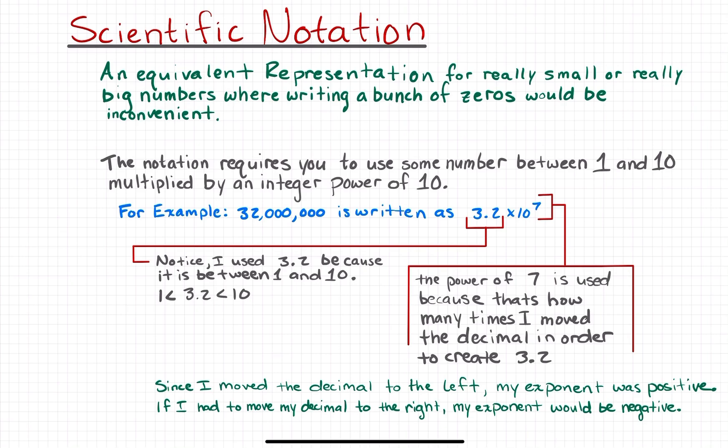For example, if you were trying to write 32 million in scientific notation, that would be written as 3.2 times 10 to the power of 7. Notice we used 3.2 because 3.2 is between 1 and 10.